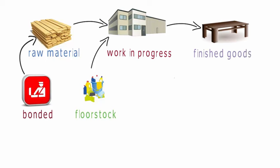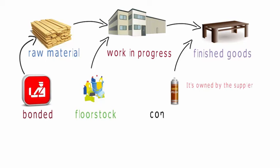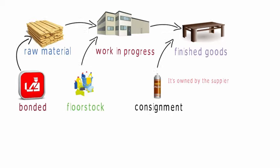Woodfern offer their customers a specialized wood polish for their furniture. This polish is optional and if a customer purchases it, it will be delivered with the furniture. While Woodfern keep the polish in their stores, it is not seen as being part of their inventory and is still owned by the supplier. This means that Woodfern do not have to tie up capital or money in inventory that they potentially may not sell. In this scenario, the polish is known as consignment inventory.